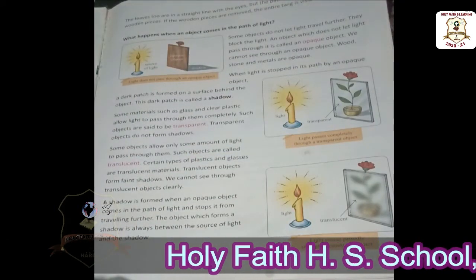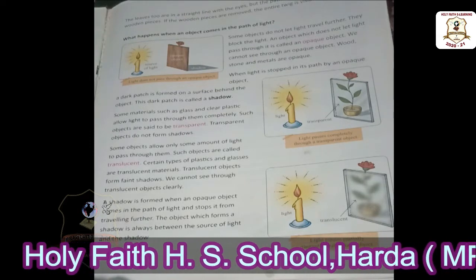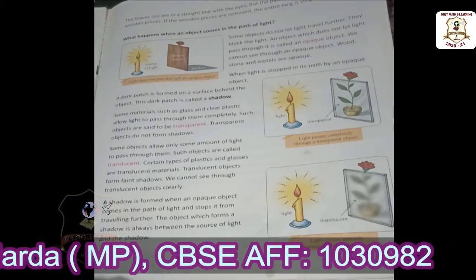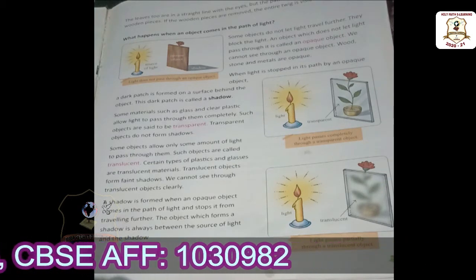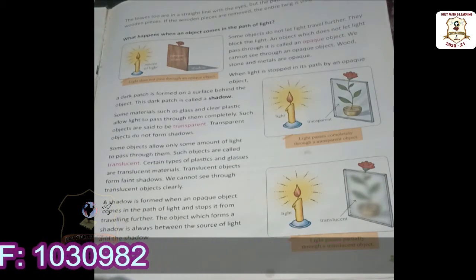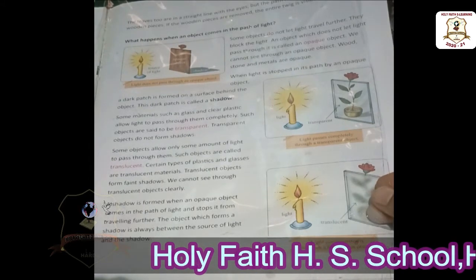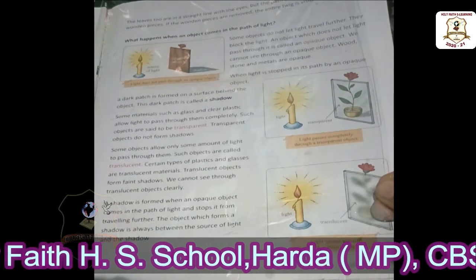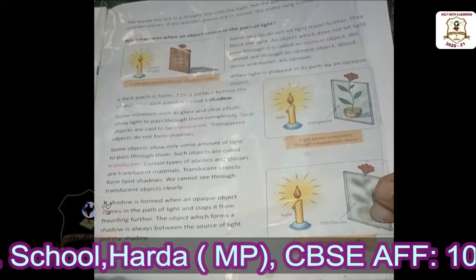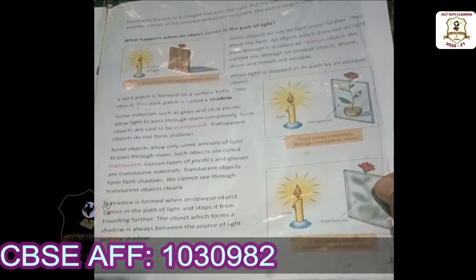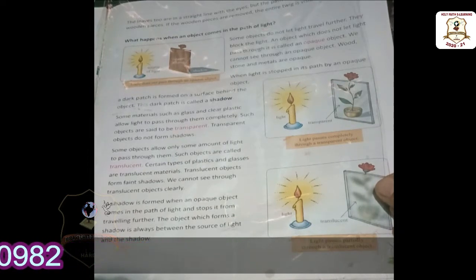Now let us learn about two other kinds of objects: transparent and translucent. See, this is a clear plastic — it is an example of a transparent object. Some materials such as glass and clear plastic allow light to pass through them completely.